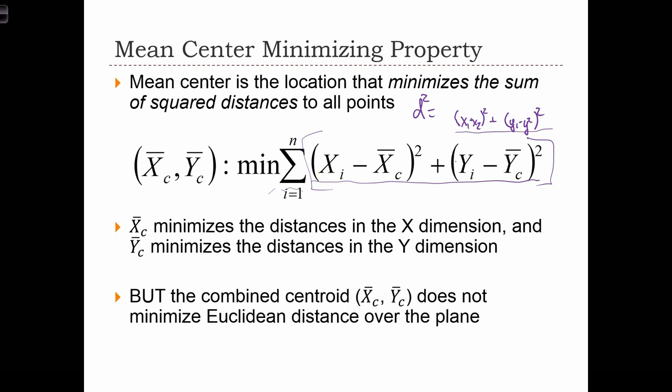And we find that if we calculate the mean center, then this sum will be minimized, meaning if we were to replace xc and yc with any other location on the map, our sum of squared distances to that point would be higher than the one used when we input xc, yc in these locations.